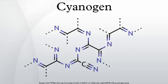Cyanogen produces the second hottest known natural flame with a temperature of over 4525 degrees Celsius when it burns in oxygen.